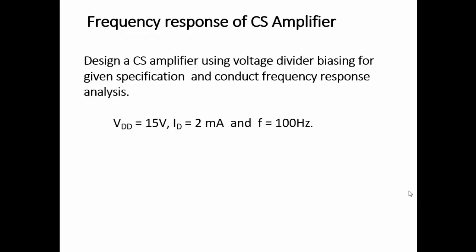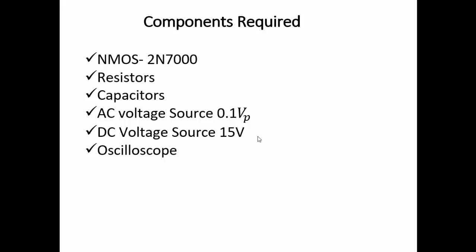The experiment is frequency response of a common source amplifier. We are going to design a common source amplifier using voltage divider biasing for the given specification and conduct frequency response analysis. The given supply voltage VDD is 15 volts, drain current is 2 milliamps, and the operating frequency is 100 hertz. The components required include a NMOS 2N7000, resistors, capacitors, AC voltage source, DC voltage source.